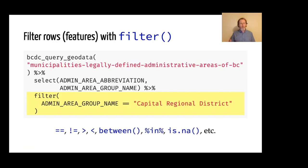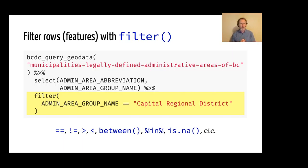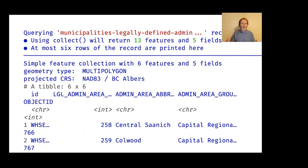After running select, we can pipe that into filter — just like dplyr and dbplyr — using a standard logical predicate. Here I'm using double equals to say: give me all of those features that have an admin area group name of 'capital regional district.' That is the regional district in which I live. Regional districts in BC are like counties in the United States — subprovincial geographic incorporations. Running collect now gives a message saying this will return 13 features, because there are 13 municipalities within the capital regional district, and those five fields — the two we asked for and three we didn't.